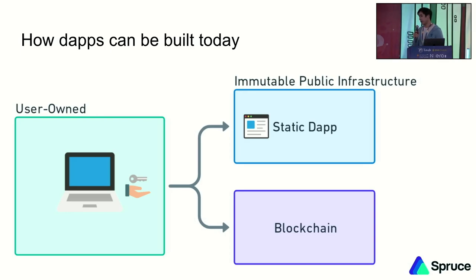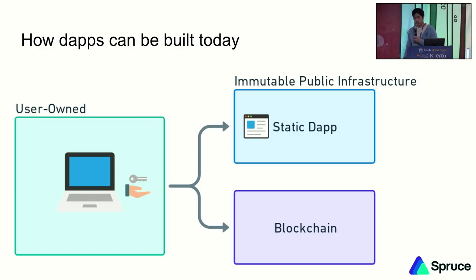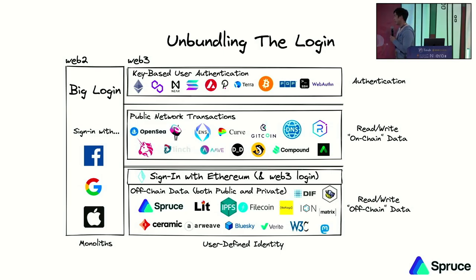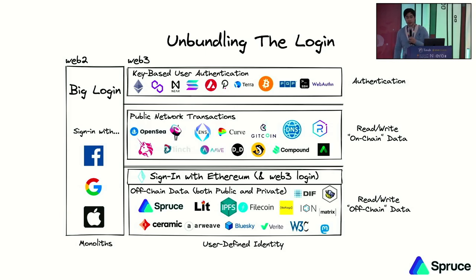And dApps today, as you probably know as dApp builders, they kind of look like this. Again, the user-owned is the hardware and the keys. What's cool about the backends for blockchains is how dApps can be built today — they can be static code, single-page apps that you can just load and use. And then the blockchain itself is immutable, and stuff can get written there. So we have this idea at Spruce about unbundling the login, where instead of one or two login providers controlling the end-to-end user experience, users define their end-to-end experience and can pull in the right resources they want for their session — whether it's places to persist data or data vaults to delegate access to data.